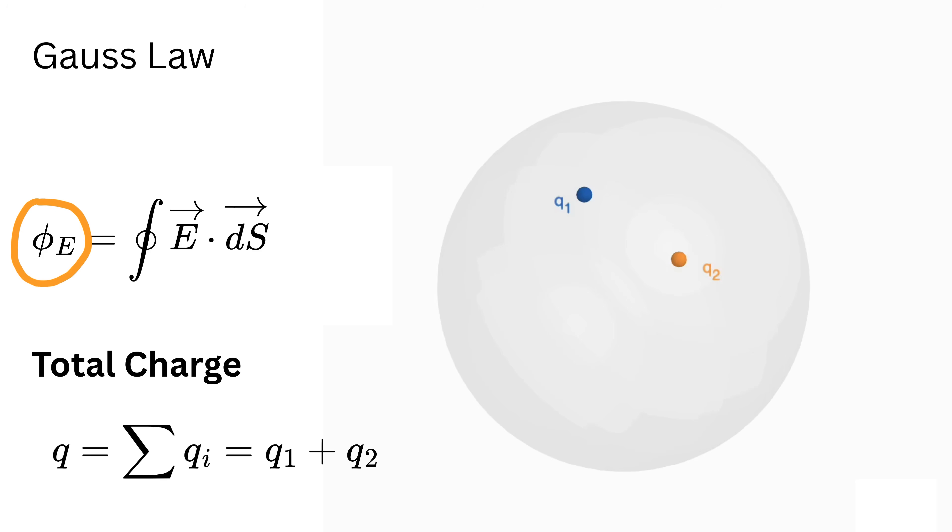The beauty of this law is that it doesn't matter what shape the closed surface has. It could be a sphere, a cube, or even a weird shape like this. As long as it encloses the same total charge q, the net flux will be the same. This means the law cares only about how much charge is inside, not about how the surface looks on the outside.